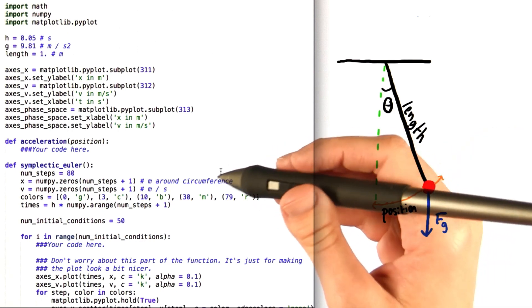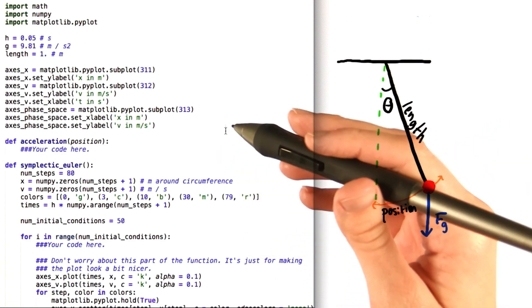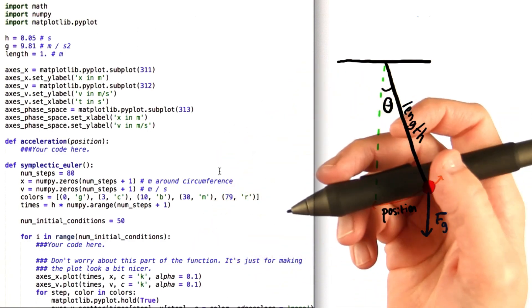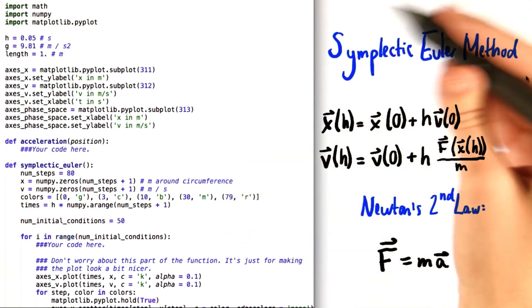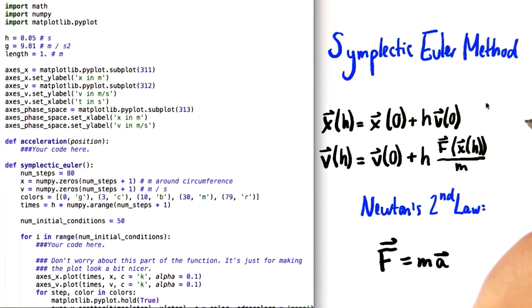The next thing that you need to do is to fill in this function called symplectic Euler, in which you will use the symplectic Euler method to calculate both distance and velocity. So to help you out a little bit, here is a refresher on what the symplectic Euler method says.